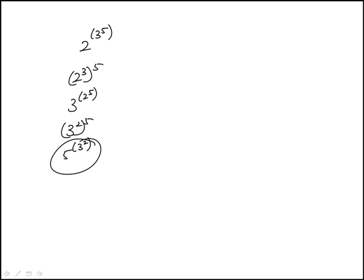So here I'll start with e. 3 squared is 9, so this is the same as 5 to the 9. Here this power of power so we can multiply the exponents, so this is the same as 3 to the 10. And then 2 to the 5 is 32, so this is 3 to the 32, so clearly this one is out because 3 to the 32 is greater.